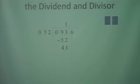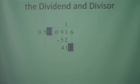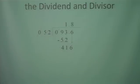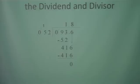We have one more number to bring down — that's going to be 6. We're going to use our cover technique: cover the 2, cover the 6, and ask how many times can 5 go into 41 without going over. We're going to guess an 8. 8 times 2 is 16 — put down your 6 and carry your 1. 8 times 5 is 40, plus 1 is 41. Subtract — we get 0. Since 0 is less than 52 and there's nothing else to bring down, 1.8 is our answer.